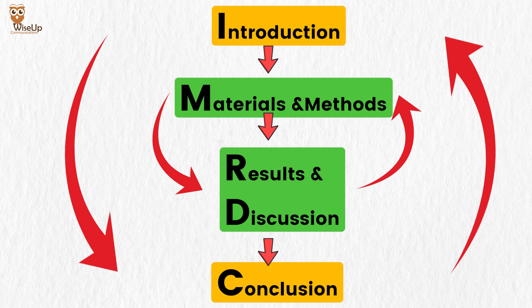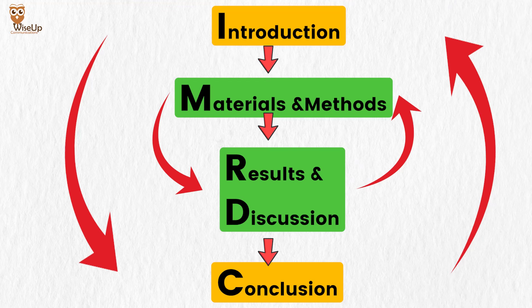The beauty of this structure is that the introduction and the conclusion section are interconnected with each other. In the introduction section we first share the motivation of our study, the background of our research field, and then we narrow it down to the specific research problem. In the conclusion section we first talk about the findings from that research problem and then broaden it out to discuss what we've contributed to the research field. Similarly, for every method there is a result, and for every result there is a method — so the materials and methods and the results and discussion sections are also interconnected.